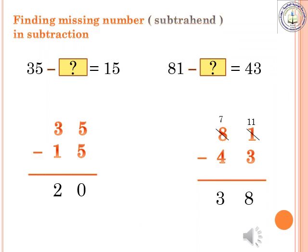Finding missing number in subtraction. First example: 35 minus dash equals 15. We can use subtraction to find this missing number: subtract 35 and 15. Arrange the numbers. In the ones place: 5 minus 5 is 0. In the tens place: 3 minus 1 is 2. So the answer is 20.